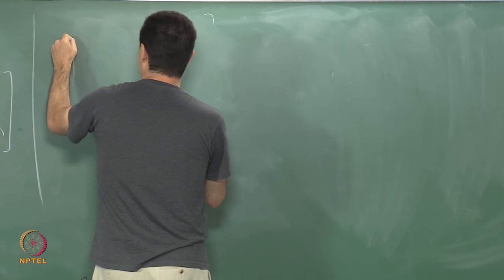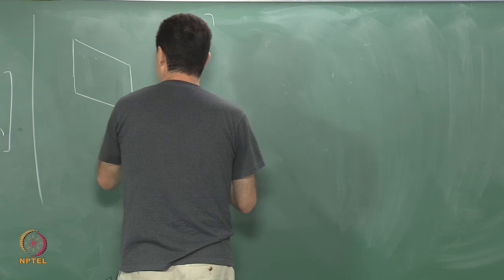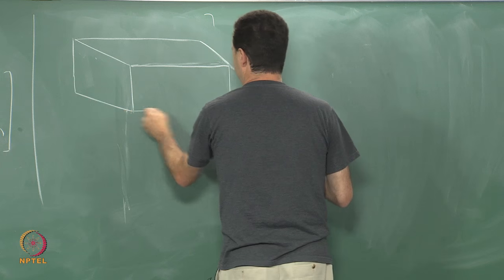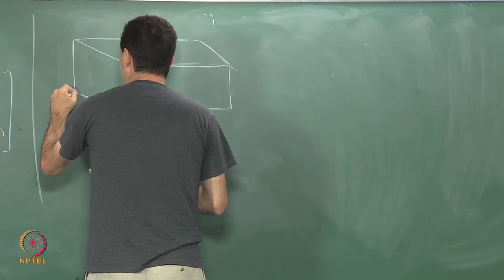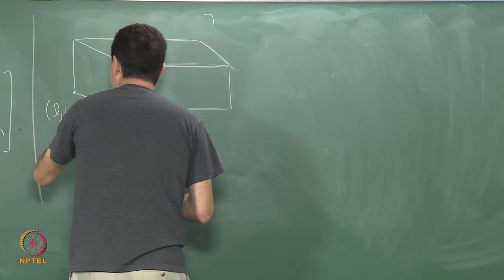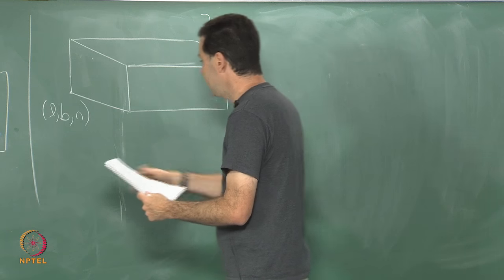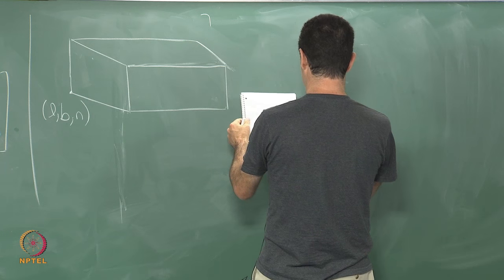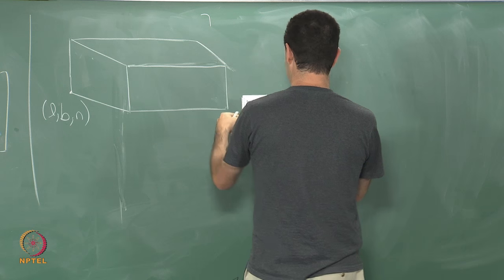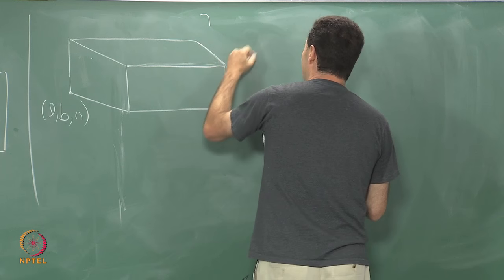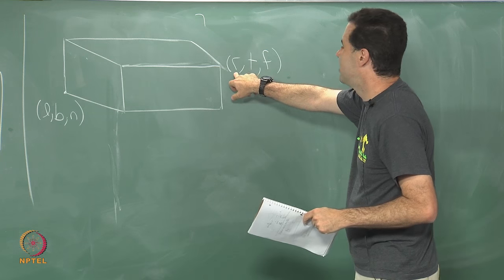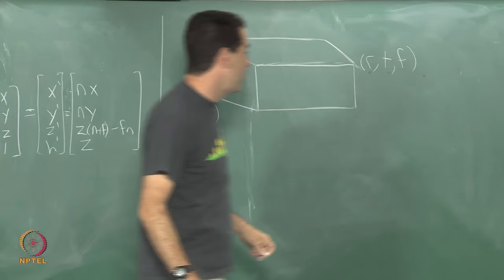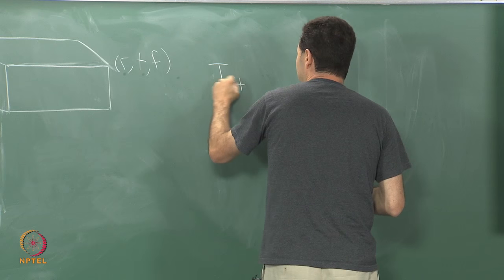After we perform this transformation we have converted the viewing frustum into a rectangular box, but we have not made the rectangular box have exactly coordinates plus or minus 1 and we have not centered it at the origin. So we have to do a scaling and translation to the box. That is not very difficult — it is a very simple scale and translate operation — but we have to put it into the pipeline. The rectangle will have coordinates: one corner at L, B, N (left, bottom, near) and the opposite corner at R, T, F (right, top, far).